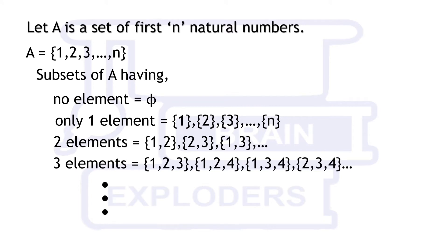Hence, number of subsets having 1, 2 and 3 elements are nc1, nc2 and nc3 respectively.